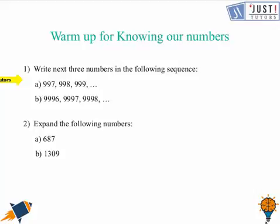It's 997, 998, 999, so the next number is 1000 which is the smallest four-digit number. The next number is 1001 and the next number in the sequence will be 1002.